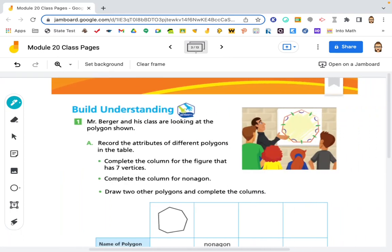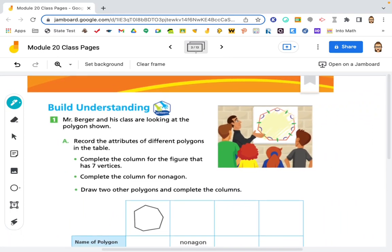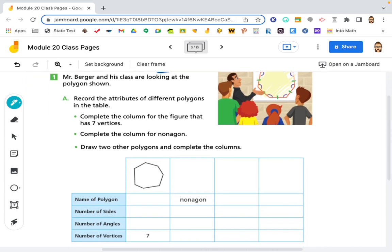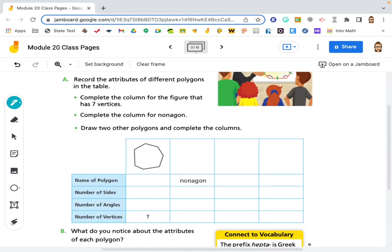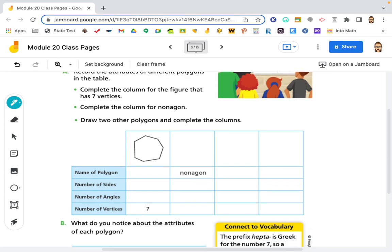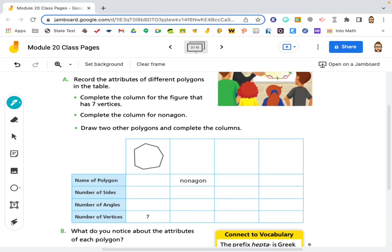So Mr. Berger and his class are looking at the polygons shown. Record the attributes of the different polygons in the table. Complete the column for the figure that has seven vertices, complete the column for nonagon, draw two other polygons, and complete the columns. Well, so this here has seven sides.